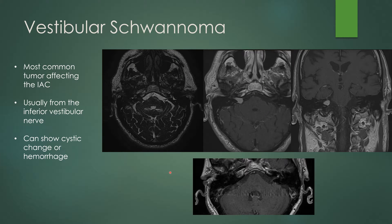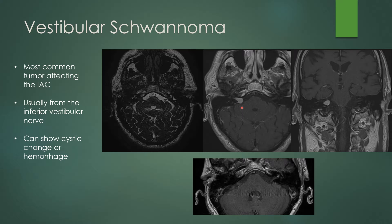The most common tumor affecting the internal auditory canal is the vestibular schwannoma. These usually arise from the inferior vestibular nerve and can show cystic change or hemorrhage. On axial T2 thin-cut imaging of the IAC, you will see a mass obstructing the normal hyperintense T2 CSF signal — it appears dark — whereas on the opposite side you see a normal 7th and 8th nerve complex. This one is projecting into the cerebellar-pontine angle, with homogeneous enhancement, though it can be heterogeneous with cystic change or hemorrhage.